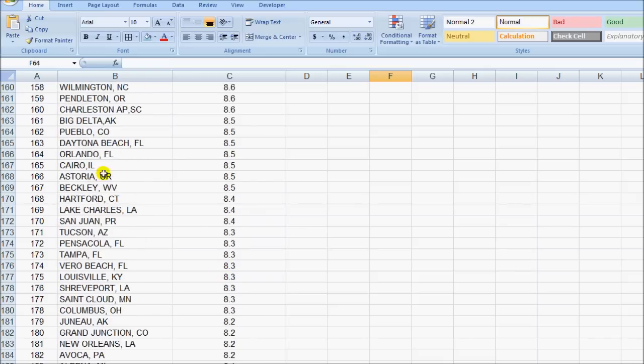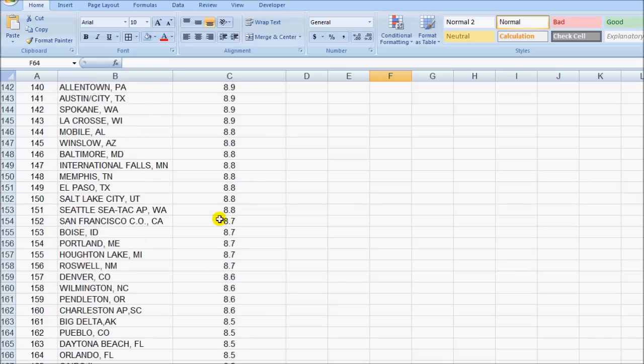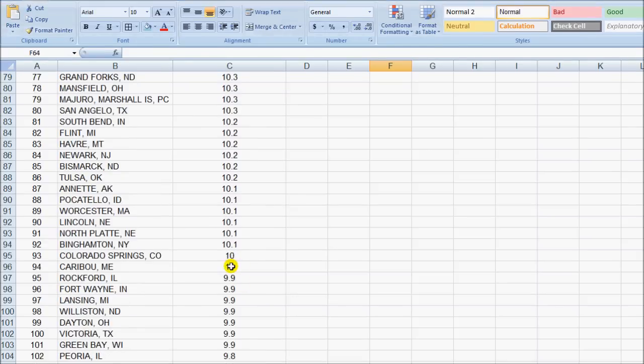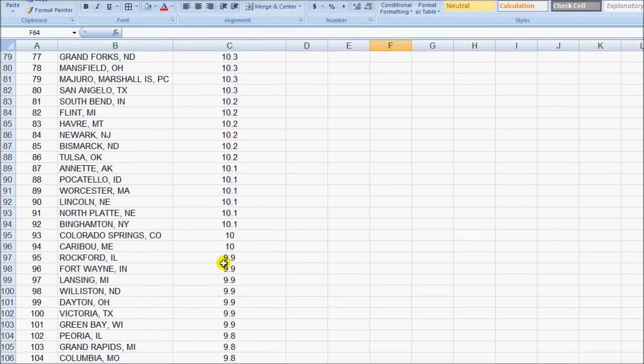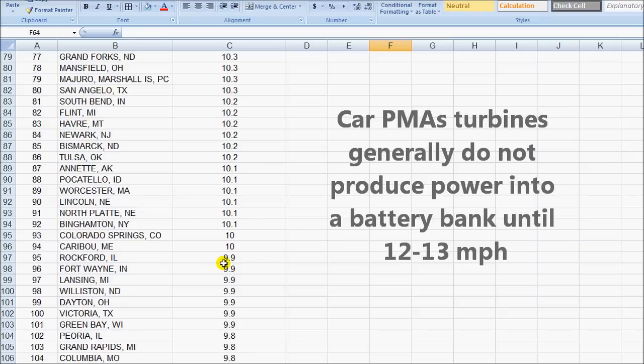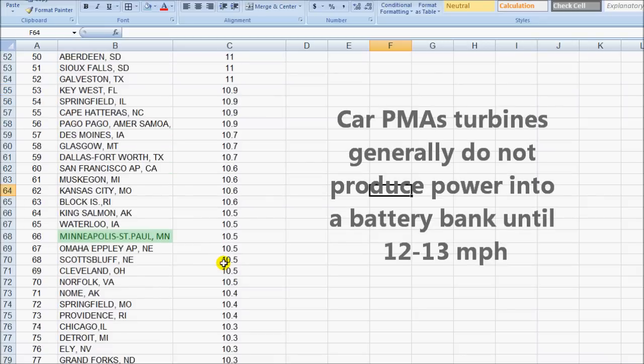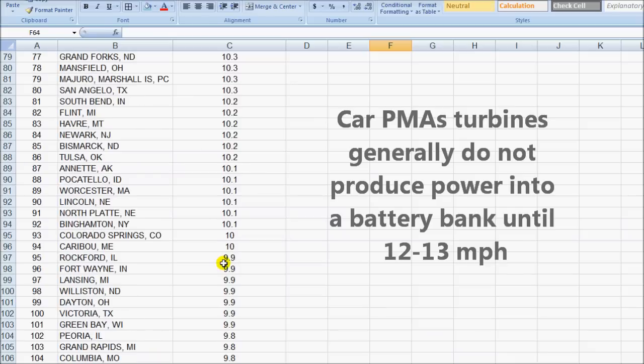So you can go through this list online and find out what it is for your area. And you can see there are a lot of places in the country that the wind is definitely on average below 10 miles an hour. So it's pretty important to get a wind turbine that is able to work in some of this low wind. If the cut-in speed of the turbine itself is up in that 12 and 13 miles an hour, you're really not going to be able to take advantage of any of this lower speed wind that's most likely in your area.